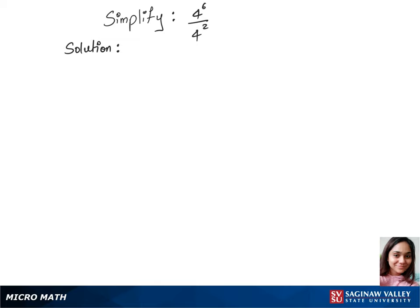To simplify 4 to the power 6 over 4 to the power 2, we'll use the quotient rule. Here we have the base 4, so we write 4 to the power 6 minus 2. This gives us 4 to the power 4, and 4 to the power 4 is 256. That's our final answer.